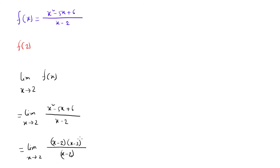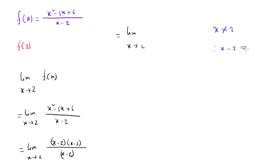Now, let's start with the x term, but the x term is not exactly equal, isn't it? So, what do we need to say? We need to say the limit as x tends to 2, so we need to say exactly that x minus 2 is not equal to 0. So, x tends to 2, but x minus 2 is not equal to 0, meaning x is not exactly equal to 2.